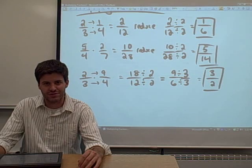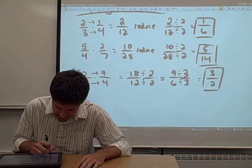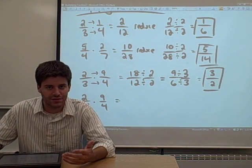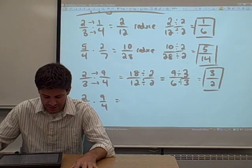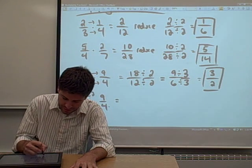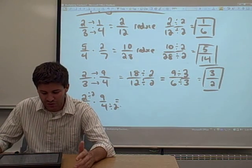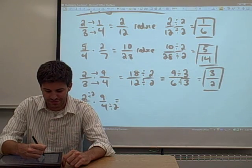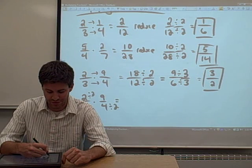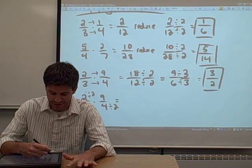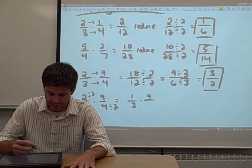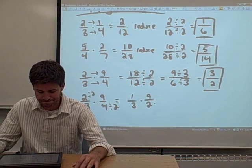Before we move on to dividing fractions, I want to mention something. Let's go back to two thirds times nine fourths. There's something you can do here — and if you don't like it, you don't have to do it, but it might save you a little bit of time. You might notice that the two and the four have a common factor. Both the two and the four can be divided by two. So instead of multiplying across fractions and then reducing, we can reduce first and then multiply. If you divide a number in the numerator and a number in the denominator by the same thing, that's legal. On the left fraction you get one third, and on the right fraction, four divided by two is two, so you have nine halves.